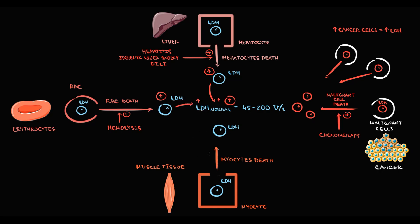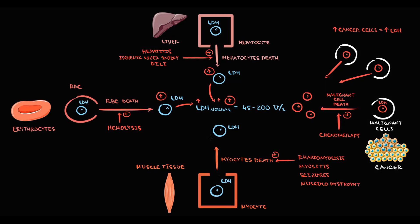The fourth group of disorders that cause elevation of LDH are conditions that cause muscle injury. It can be rhabdomyolysis, myositis, seizures, or muscular dystrophy — all of which cause myocyte death. With the death of myocytes, intracellular content enters the blood, including LDH, causing elevation of LDH levels.